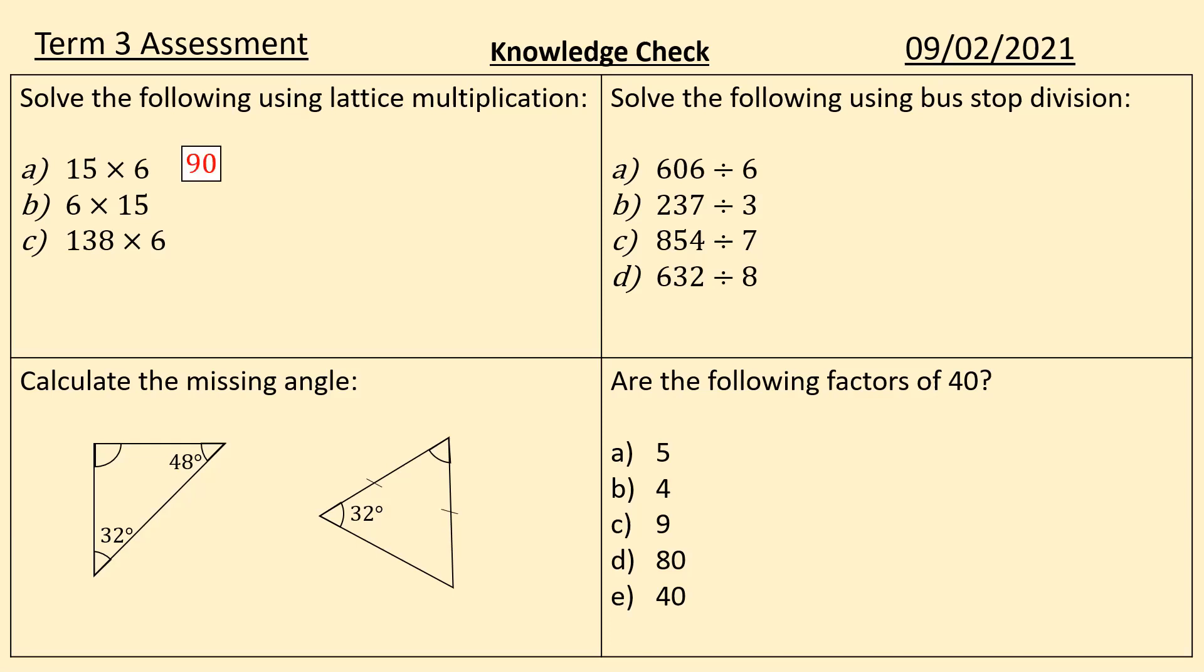So firstly, here come the answers. For the lattice multiplication, hopefully we saw the first two were commutative but you could still lay out those grids, and the third one we know that some exchanging is going to go on.